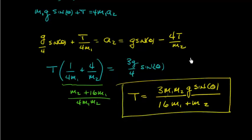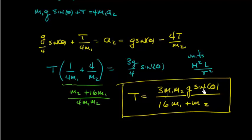Let's do a quick unit check. In the numerator we have mass squared; g is length over time squared; dividing by mass in the denominator cancels one mass, leaving units of mass·length/time², which is a force. Checks out.